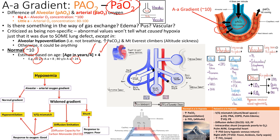For a 16-year-old: 16 ÷ 4 = 4, plus 4 = 8. So a gradient of 8 is normal for a 16-year-old — that's the expected diffusion restriction between the alveolus and the arterial bloodstream. The gradient increases with age. An elevated gradient suggests something is impairing gas exchange — edema, pus, vascular issues — but it's nonspecific and not useful when CO2 is high. A normal gradient with hypoventilation simply means alveolar hypoventilation — not enough oxygen reaching the alveolus because they're not breathing.